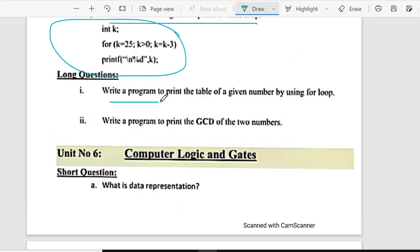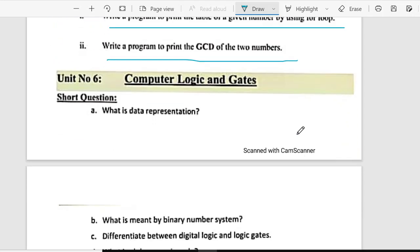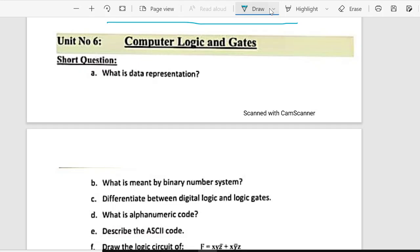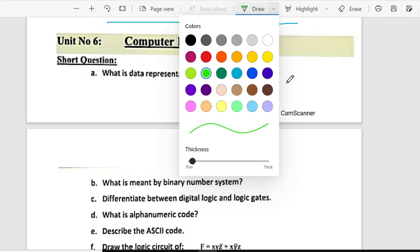Long question is, write a program to print the table of a given number by using loop. And the second is, write a program to print the GCD of the two numbers. After this, unit six is, color change. Unit six.